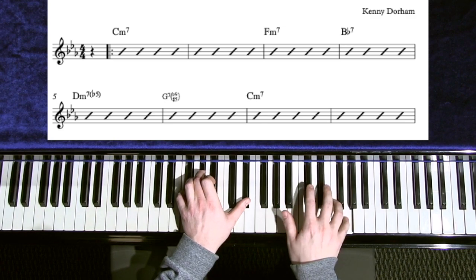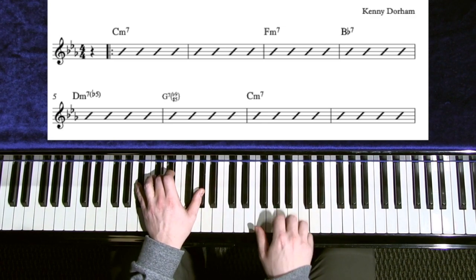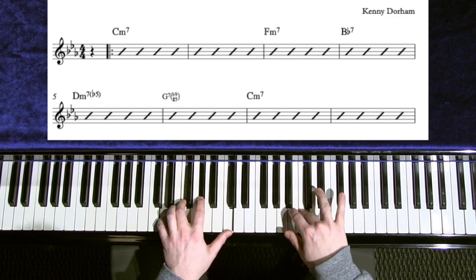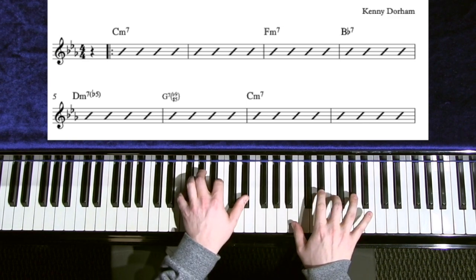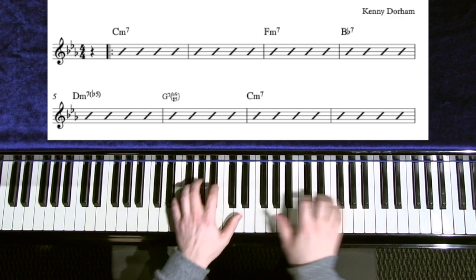And F minor from the 3rd, B flat 7 from the 3rd, D half diminished from the 3rd. Here I'm going to use the E flat on top, and then G altered, and then C minor.